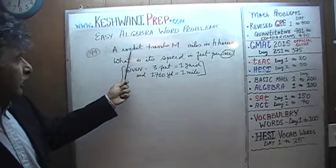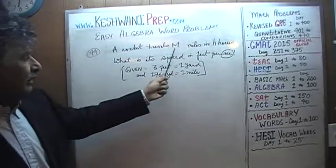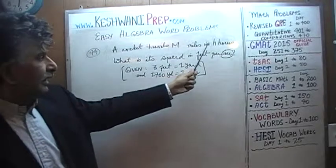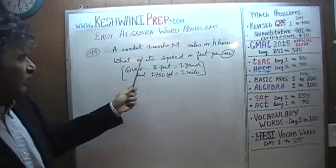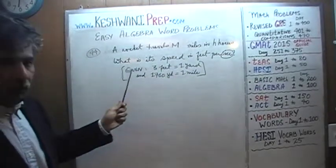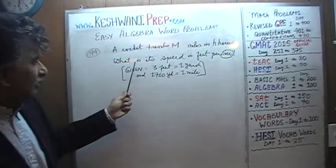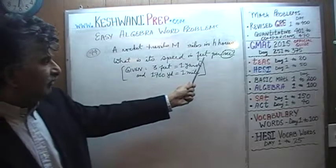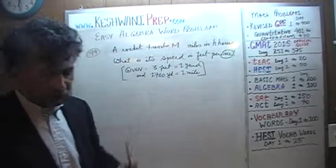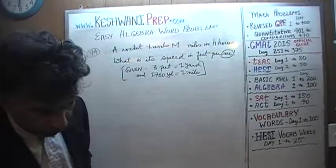We are being told that a rocket can travel m miles in h hours. The question simply is, what does that translate into its speed in terms of feet per second? Let's see what we can do.